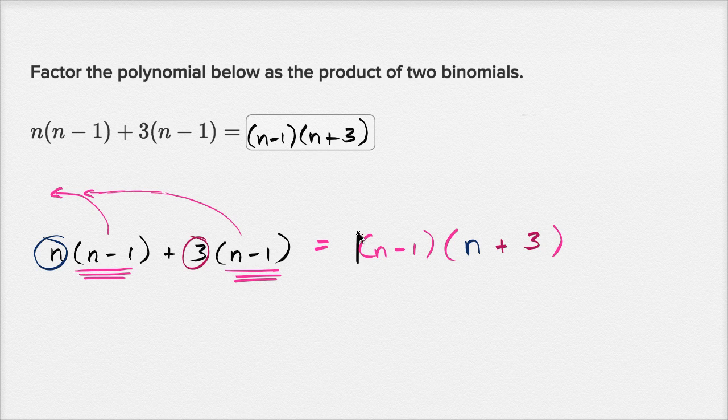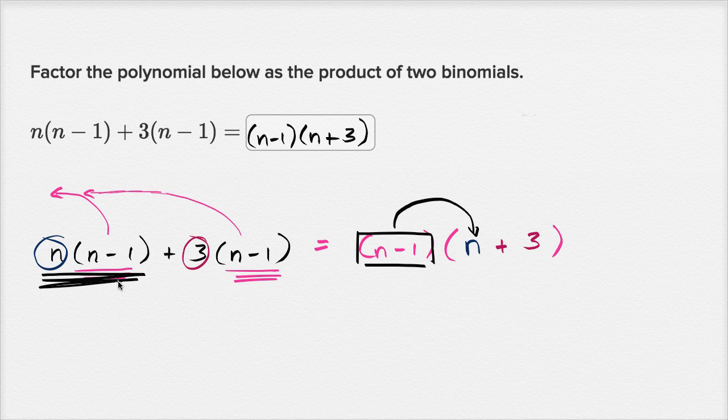And once again, you can check this. You can take this n minus one and distribute it. n minus one times n is this term right over here, n times n minus one. And then n minus one times three is this term right over here, n minus one times three or three times n minus one.